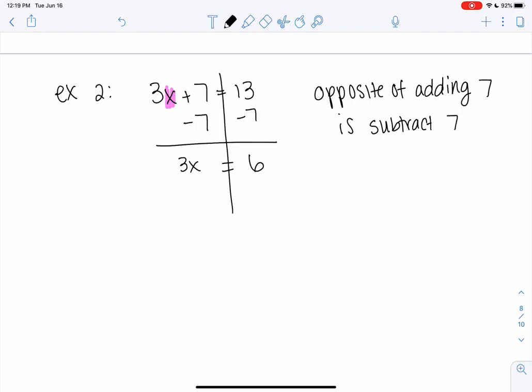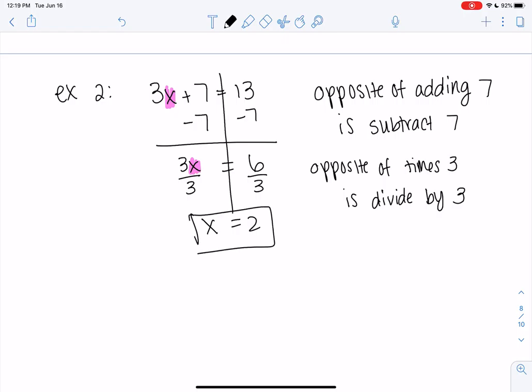And then now we're left with 3 times x. So we've got to get rid of the 3. The opposite of timesing by 3 is dividing. So we'll divide by 3. And we're left with x is 2. Didn't realize I made the answer the same. Just a coincidence that they both happen to be 2.